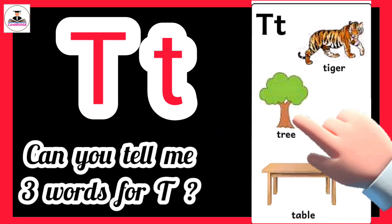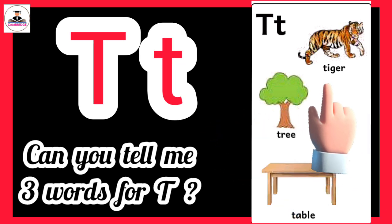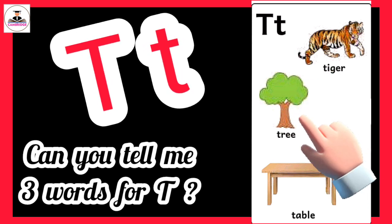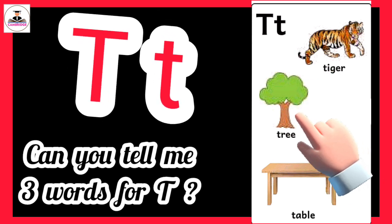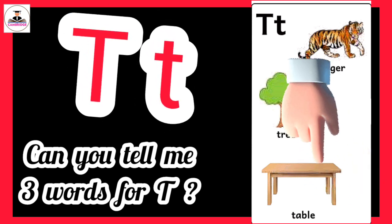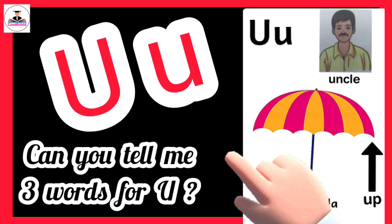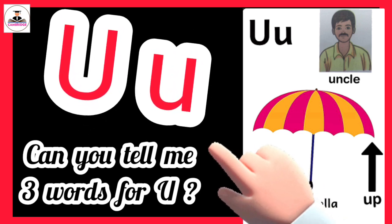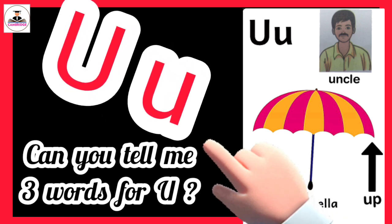T for tree, tiger and table. Can you tell me three words for U?